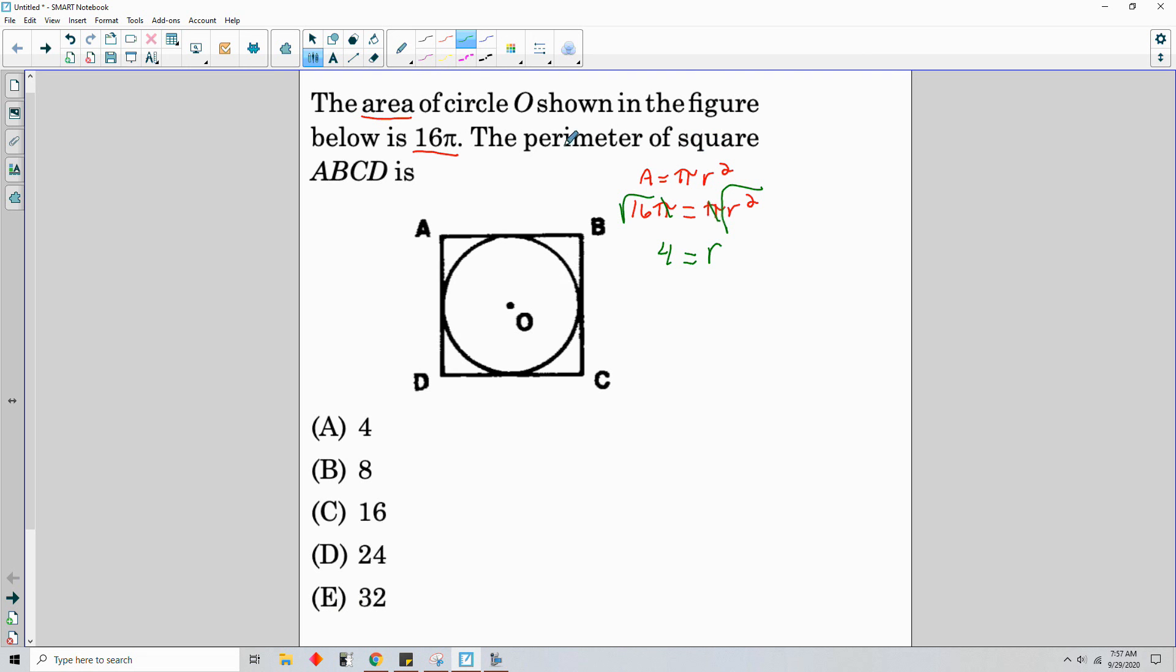The perimeter of square ABCD is... Okay, so now what they're talking about is taking that information from your circle. And if the perimeter is what they're asking for, we know the radius.